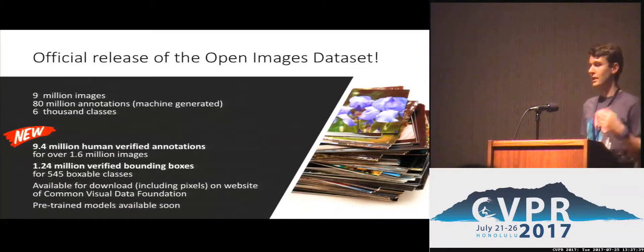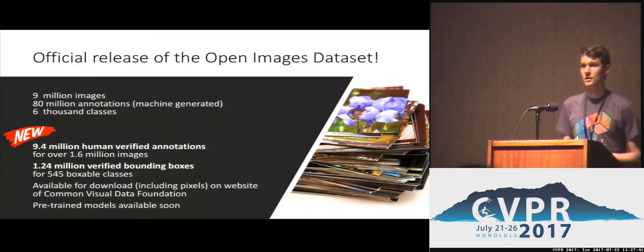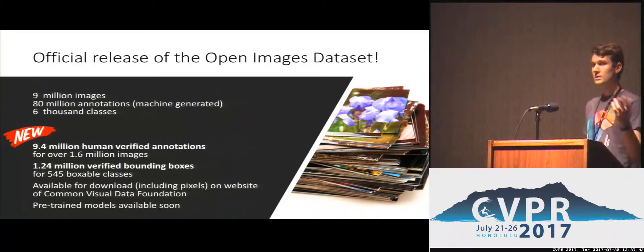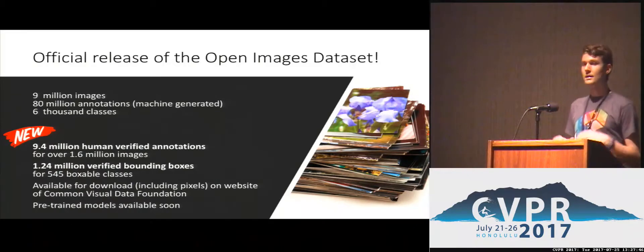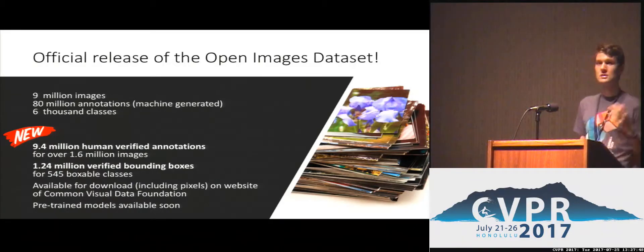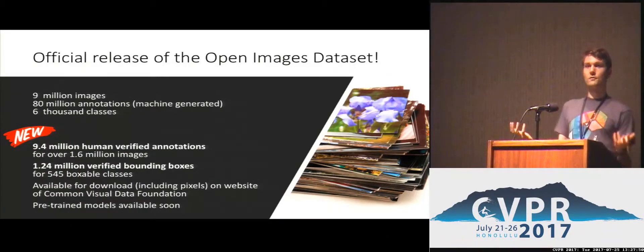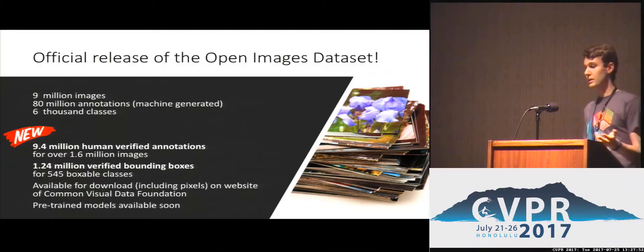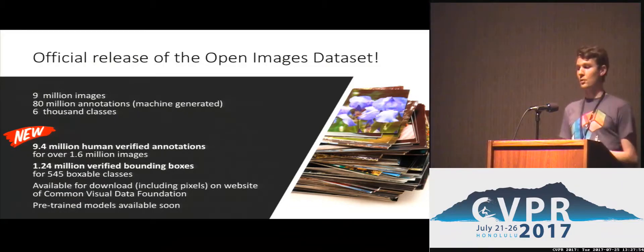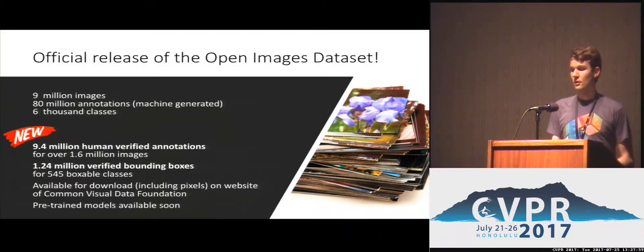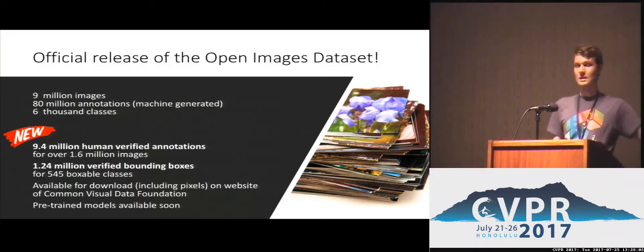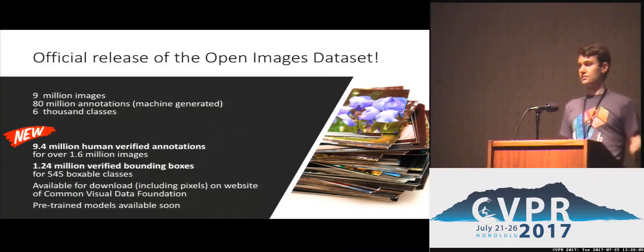First I want to use this chance to advertise the official release of version two of the Open Images dataset. Last year we released 9 million images with 80 million annotations, machine-generated over a vocabulary of 6,000 classes. As of last week we added human verifications for over 1.5 million images and, more excitingly, we now have bounding boxes over 1.2 million images over a vocabulary of more than 500 classes. Image pixels and pre-trained models will be available soon.